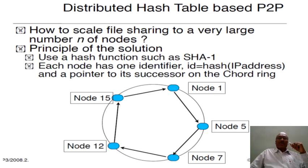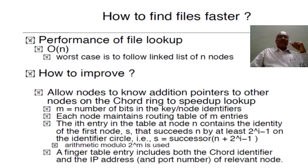This is illustrated with nodes 1 to 5 connected in a circular manner, where messages get exchanged to retrieve the corresponding value. The performance of the file lookup is O(n) in the worst case, similar to a linked list of n nodes. In order to minimize this O(n) worst case, a better technique is needed.